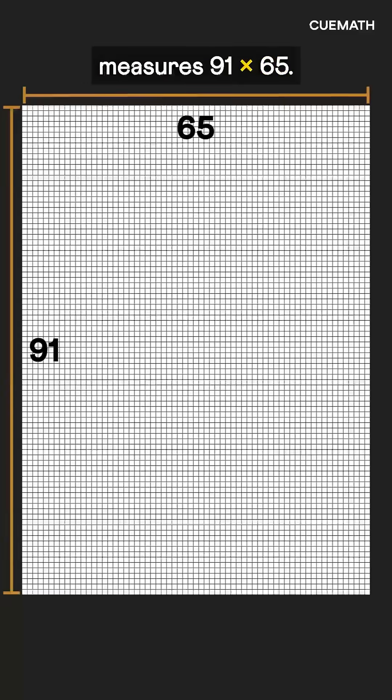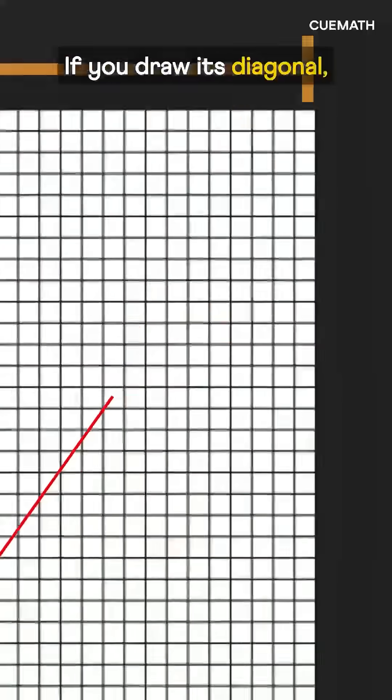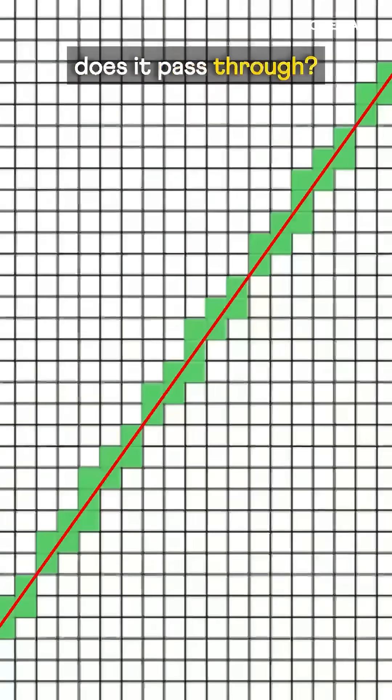A grid of squares measures 91 by 65. If you draw its diagonal, how many unit squares does it pass through?